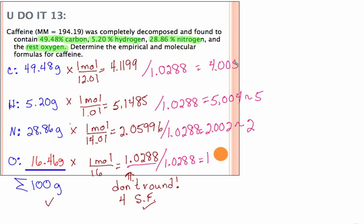This would be 5.004, again rounds nicely to 5, and then this one is 4.005 which we can round to 4. So that gives us an empirical formula of C4H5N2O.